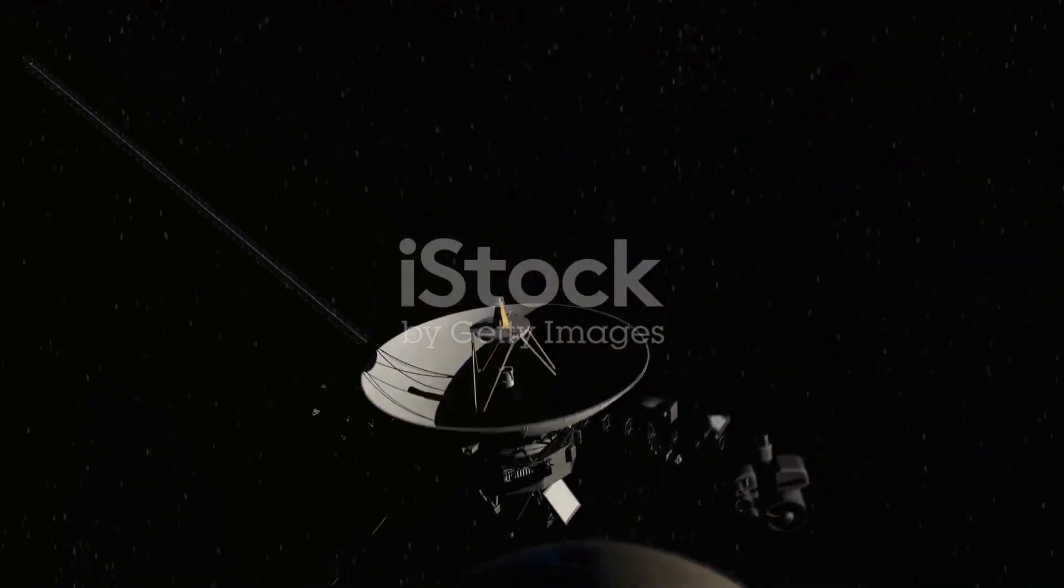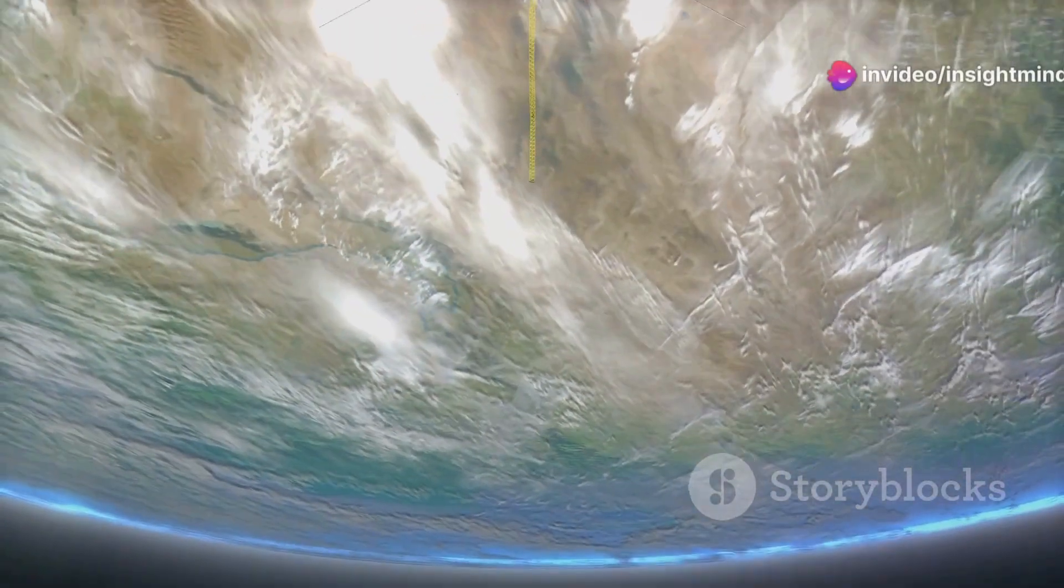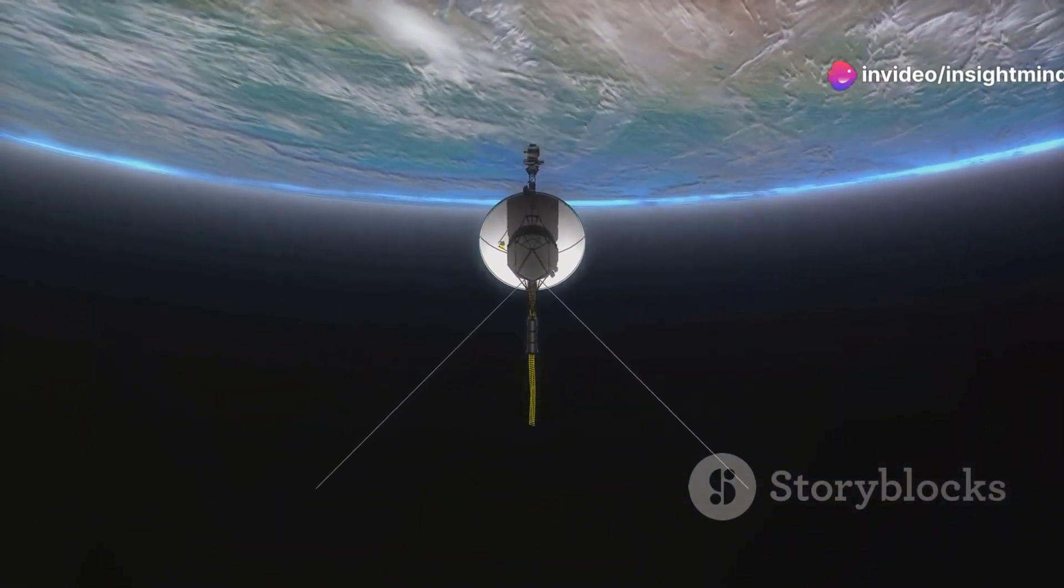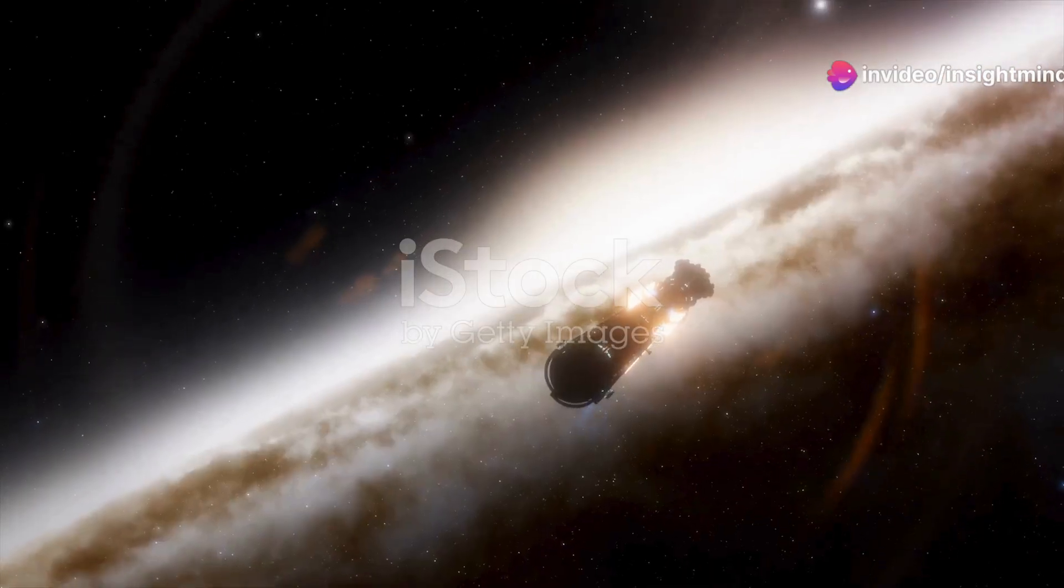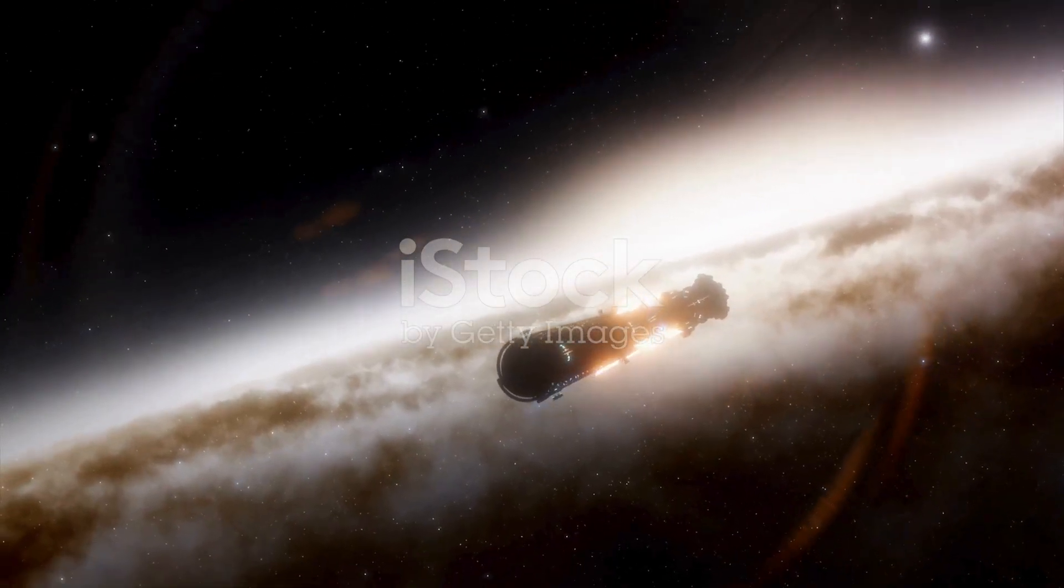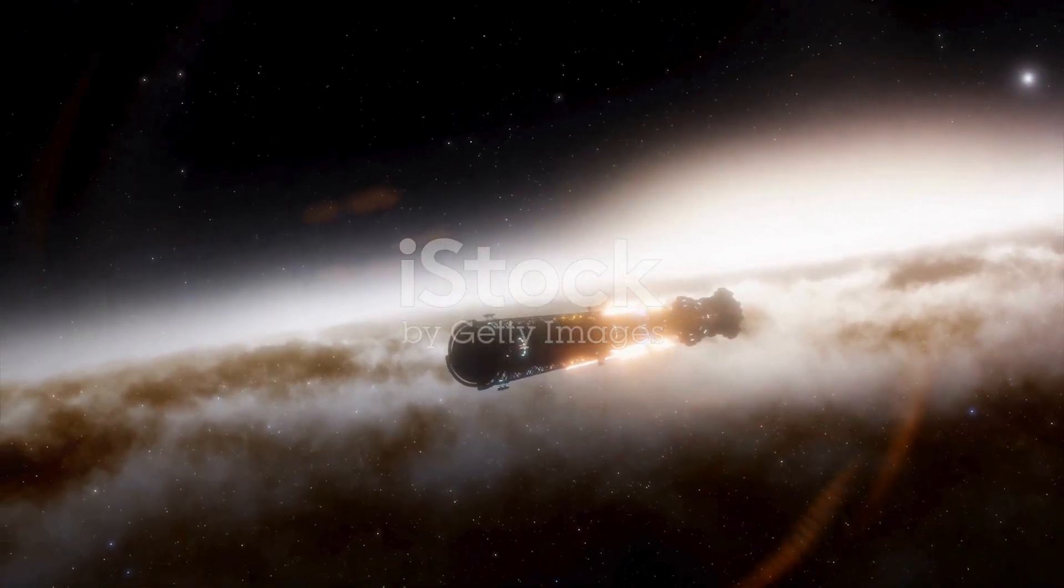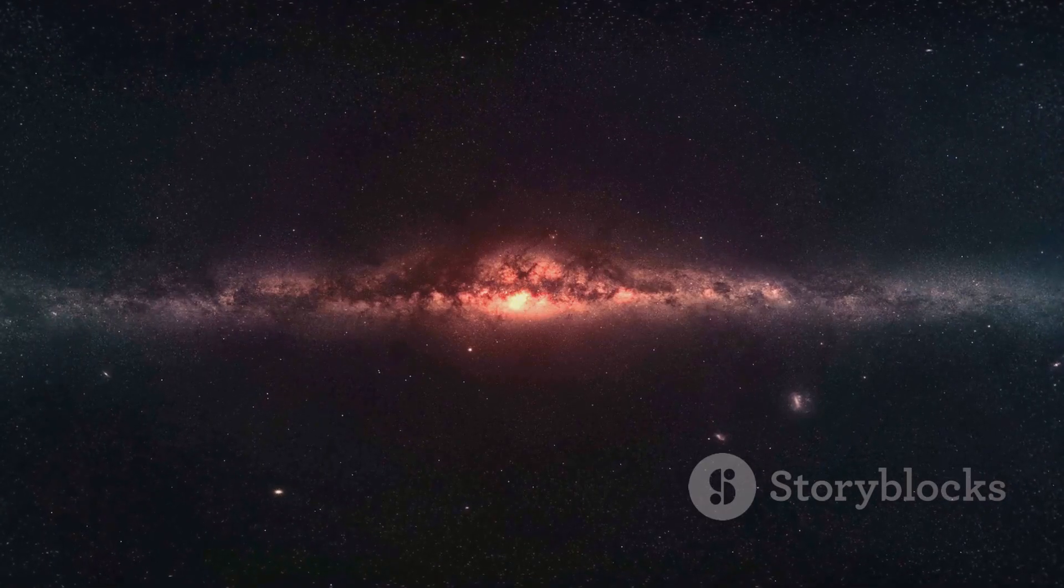Voyager 1 and Voyager 2, each a marvel of human ingenuity, embarked on a path to explore the outer planets and then something even more audacious. Crossing the heliopause, they entered interstellar space, becoming the first human-made objects to do so.